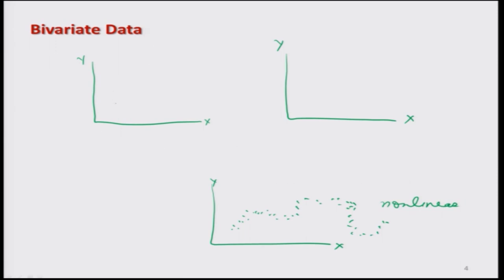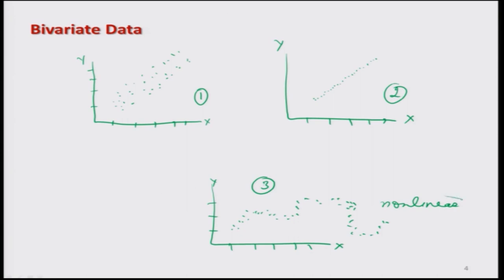Now here I am going to consider a linear trend dataset — it looks something like this — and then there is another dataset which is something like this. We believe the scaling on all figures is the same. Let me call them figure number 1, figure number 2, and figure number 3. It is clear that figure 3 is non-linear, meaning the trend in the data shows a possible non-linear relationship.